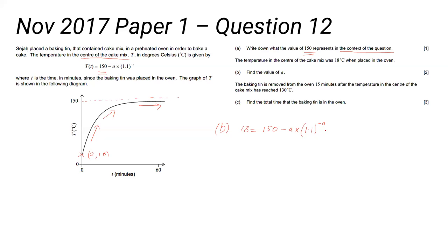Some of you will be tempted to put that into your GDC, but of course negative 0 is 0. 1.1 to the power 0—well, you should know what anything to the power 0 is. So you can actually solve that without using your calculator.